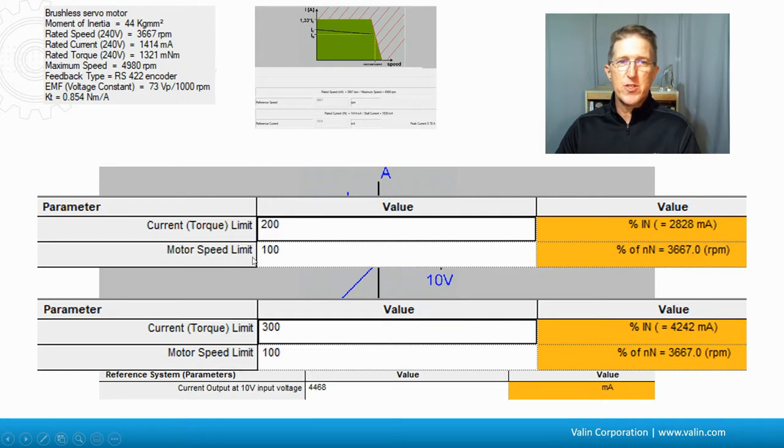Also notice here that the motor speed limit is 100% here to 3,667 RPM. If you're wanting to actually get the fully rated speed of 4980, then you need to increase this motor speed limit to a higher value.